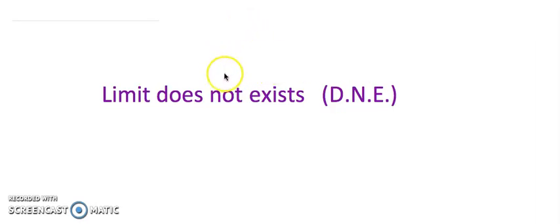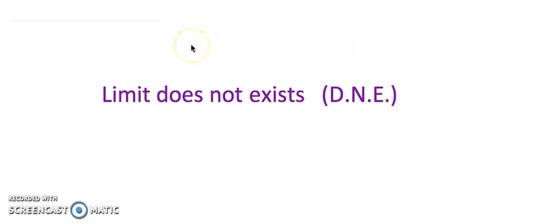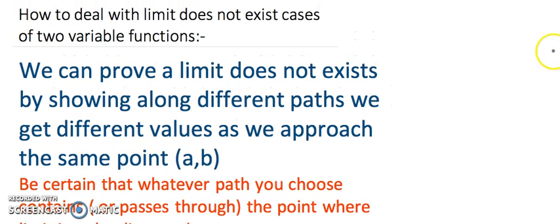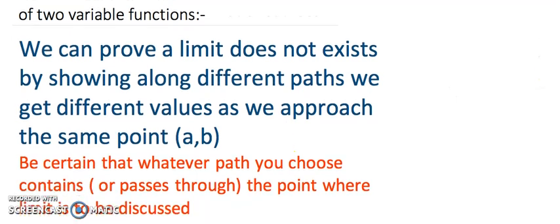Hello everyone. In continuation of the topic of limits of functions of two variables, I would like to talk about questions where the limit does not exist. For that, you have to understand the strategy, because there are various techniques applicable for that case. To discuss when a limit does not exist, it is enough to show that by taking different paths you are getting different values.